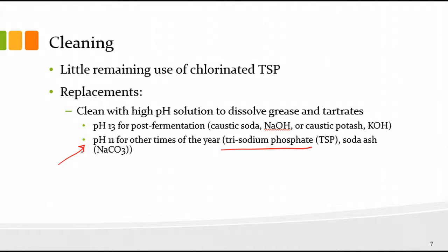Lower-pH choices are often used post-harvest after fermentation, because we're just moving wine from tank to tank and the vessels don't get as dirty. Post-fermentation, you tend to have more tartrates and more stuff inside the tank, so you sometimes need a stronger cleaning solution — that's where you go to a higher pH, like pH 13. Something like caustic soda, sodium hydroxide.